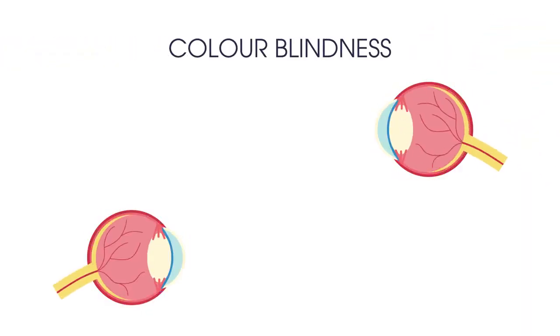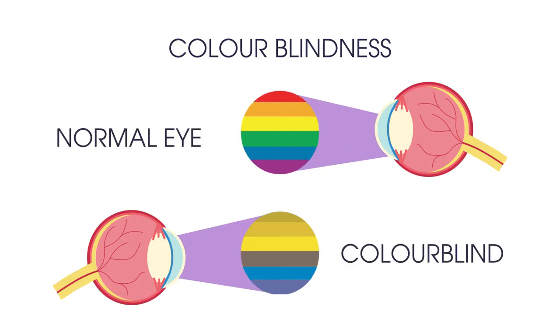Perhaps you know someone who is colour blind or maybe you are. A colour blind or colour vision deficient person cannot tell some colors apart or may only see the world in shades or tones. But why does this happen?